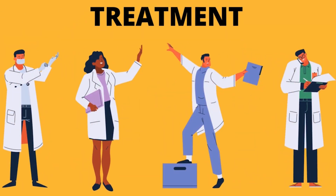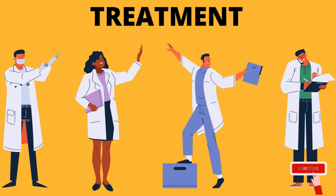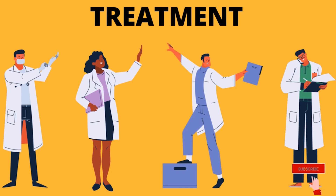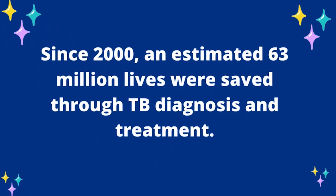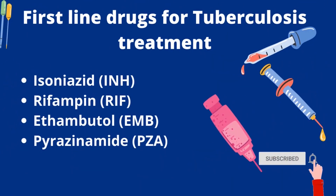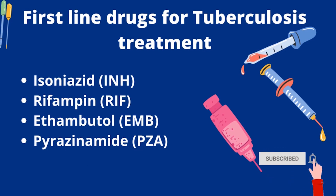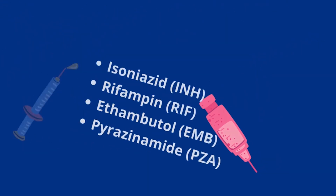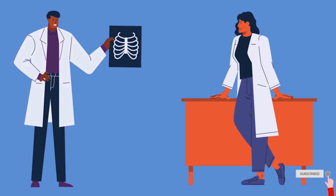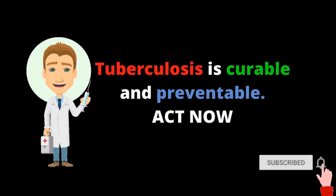TB is a treatable and curable disease. Active, drug-susceptible TB is treated with a standard six-month course of four antimicrobial drugs, provided with information and support by a health worker or trained volunteer. Without such support, treatment adherence is more difficult. Since 2000, an estimated 63 million lives were saved through TB diagnosis and treatment. First-line drugs for TB treatment include isoniazid, rifampin, ethambutol, and pyrazinamide. A doctor will decide which is best based on the diagnosis and level of infection.